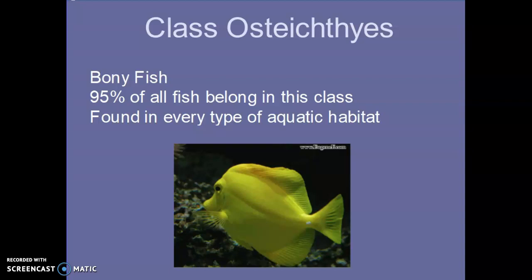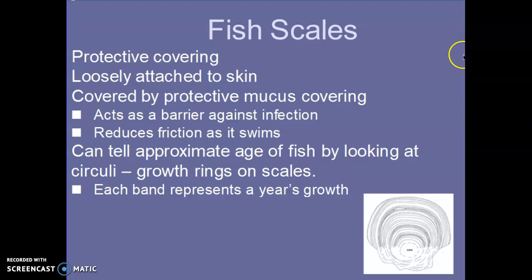Our next group of fish is called Osteichthyes. As you're probably already aware, osteo means bone, so these are all of your bony fish. 95% of all the fish belong in this class, and they can be found in any type of environment: ocean, freshwater, brackish, etc.